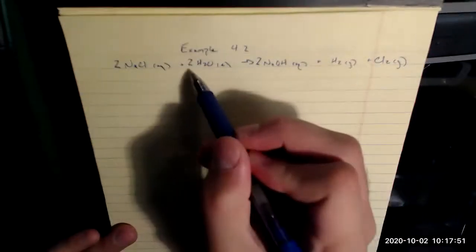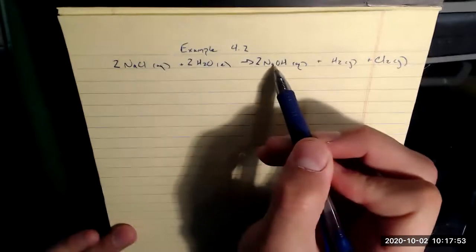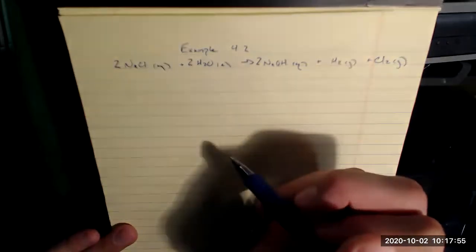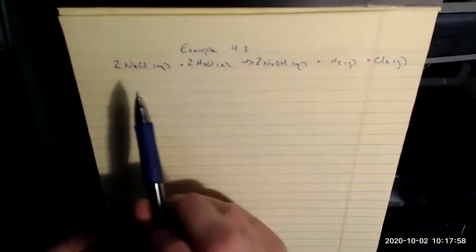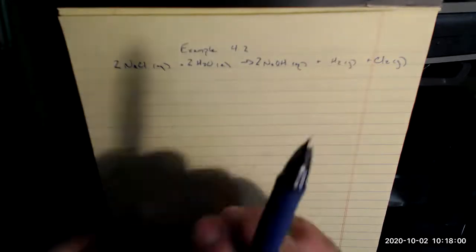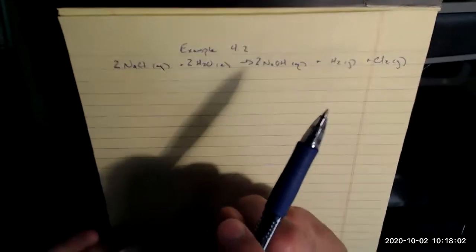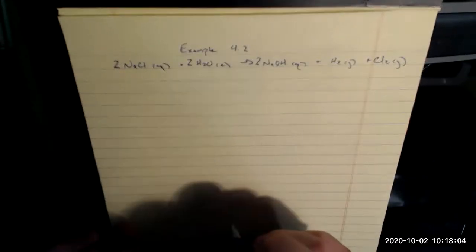Then I look at oxygen: two and two, all right, that was lucky. So now I have a balanced reaction. Two sodiums, two chlorines, four waters, and two oxygens on each side. That was balancing by inspection.